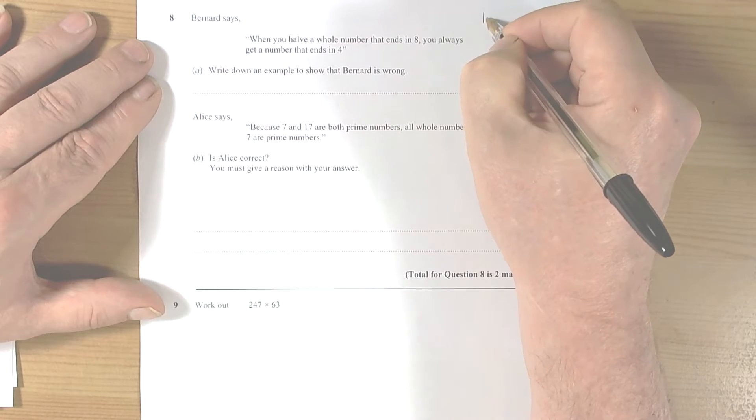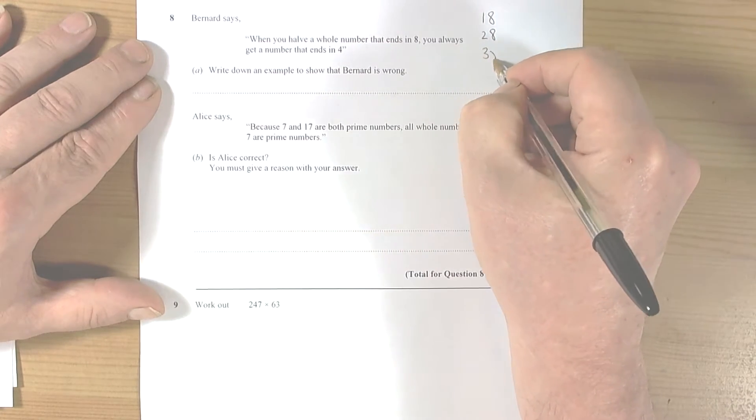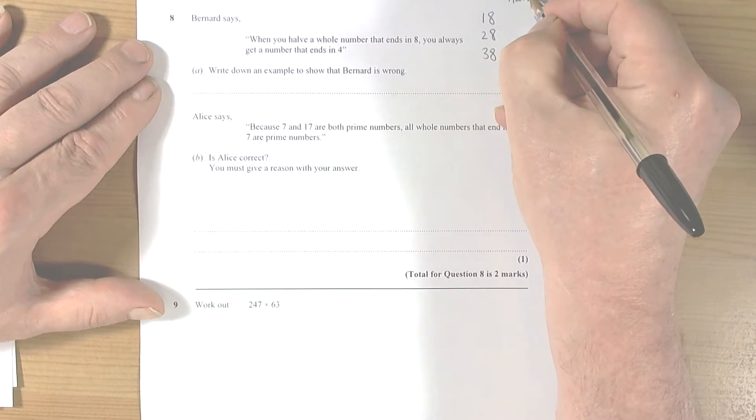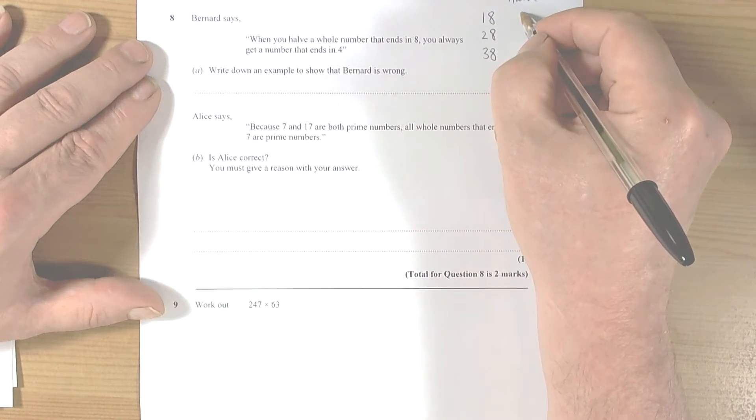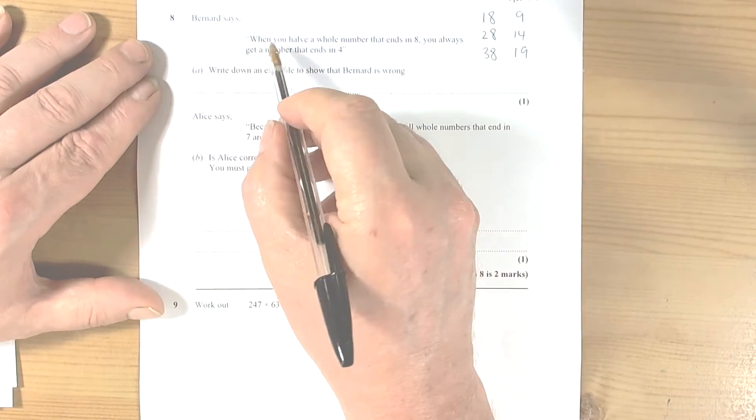So 18, 28, 38, and let's halve them. So half of 18 is 9, half of 28 is 14, half of 38 is 19. So when you halve the whole number that ends in eight, you always get a number that ends in four.